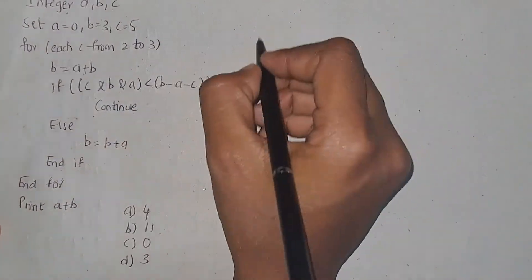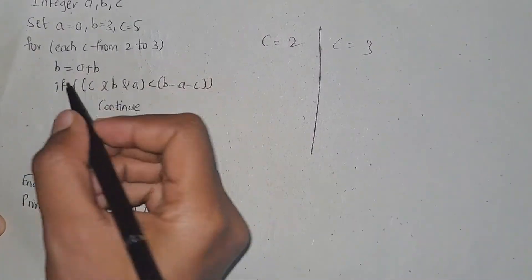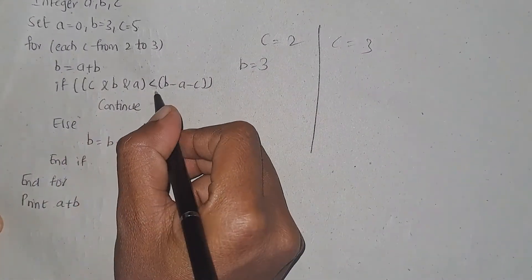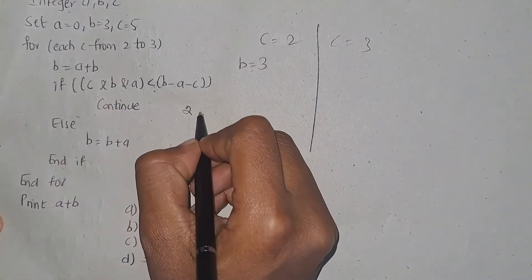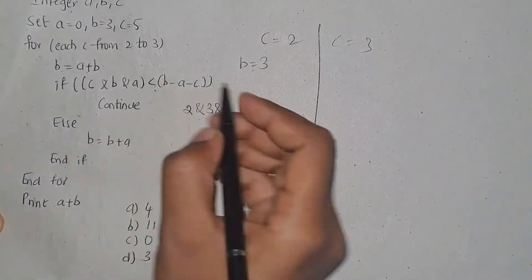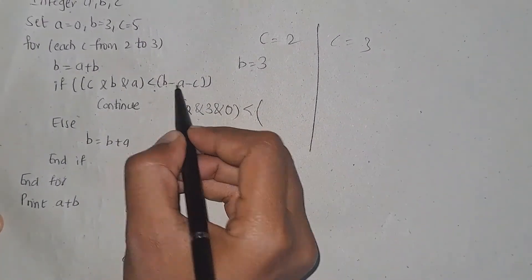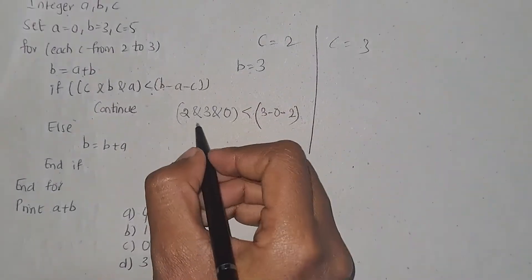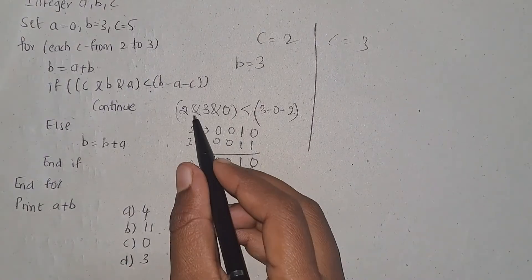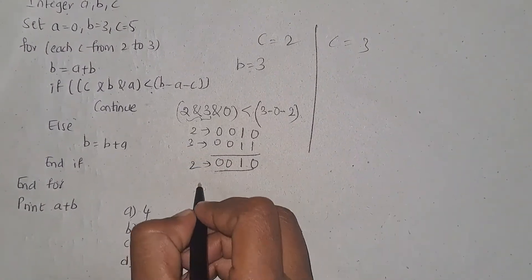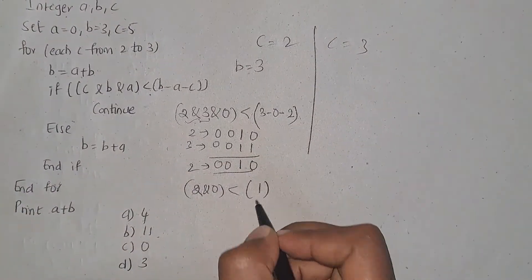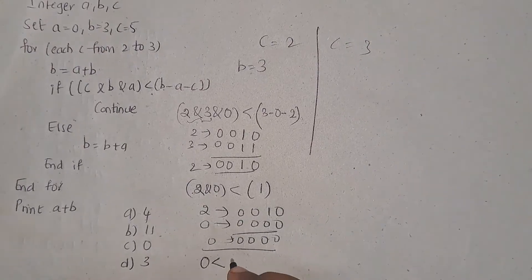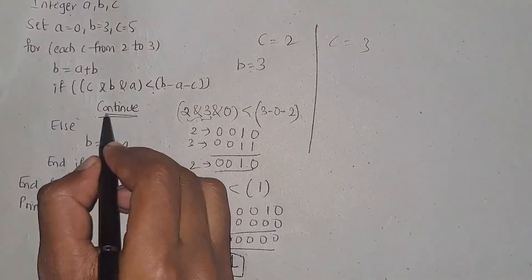For this question c equals 2 and c equals 3 are the iterations. b equals a plus b: a is 0 and b is 3, so 0 plus 3 is 3. Check the condition: c is 2, 2 bitwise AND b which is 3, bitwise AND a which is 0, is less than b minus a minus c, that is 3 minus 0 minus 2 equals 1. Performing the bitwise AND gives 2, then 2 bitwise AND 0 is 0. Is 0 less than 1? This is true, so continue to the next iteration.